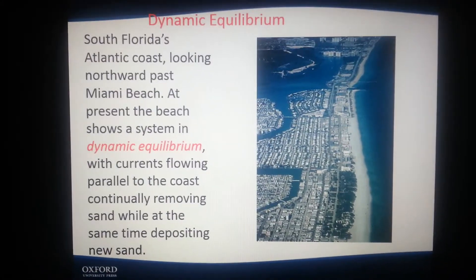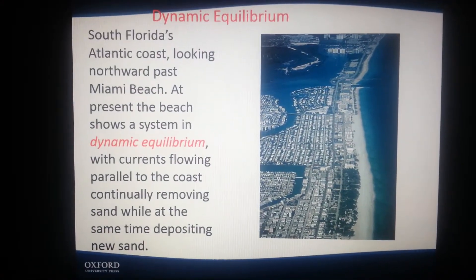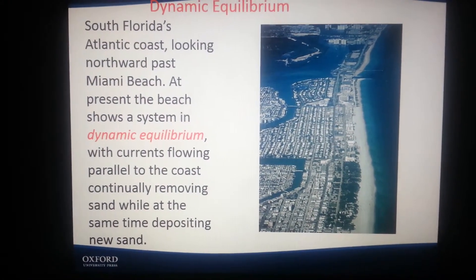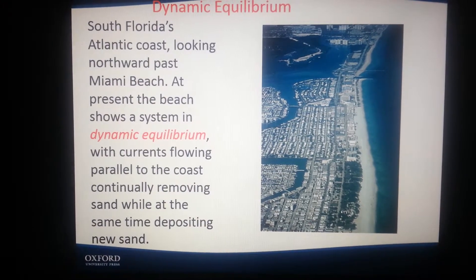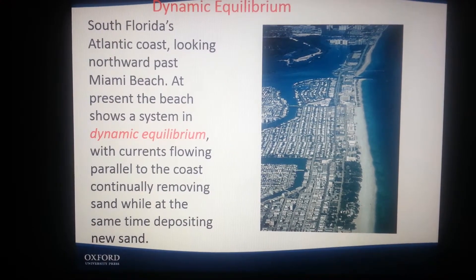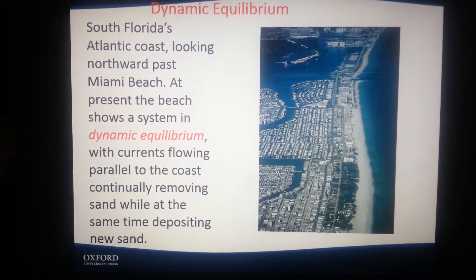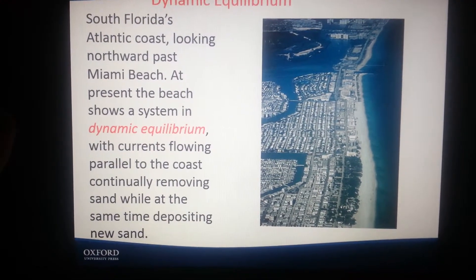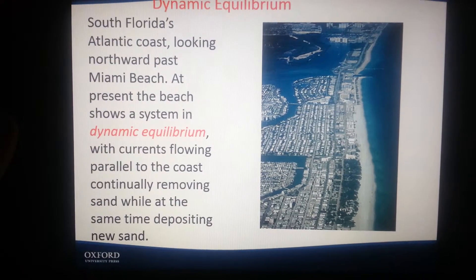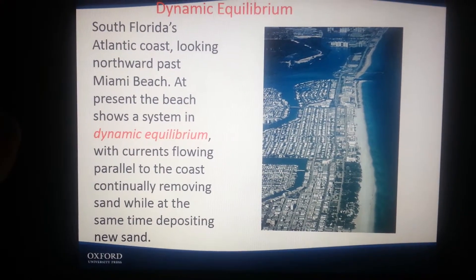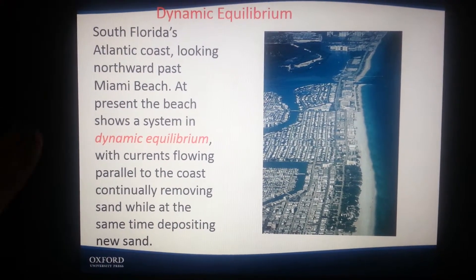And then we have dynamic equilibrium, which is south of the Atlantic coast looking northward past Miami Beach. At present, the beach shows a system in dynamic equilibrium, with currents flowing parallel to the coast continually removing sand while at the same time depositing new sand.